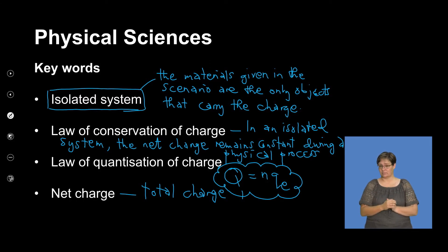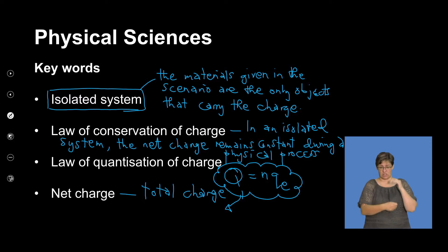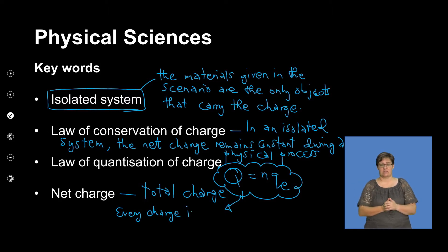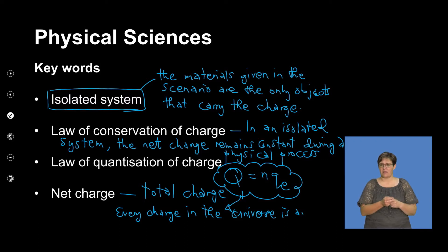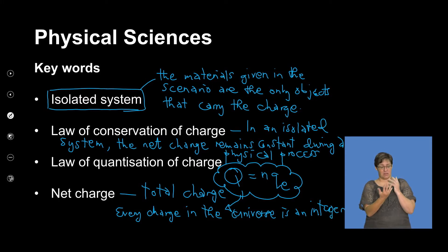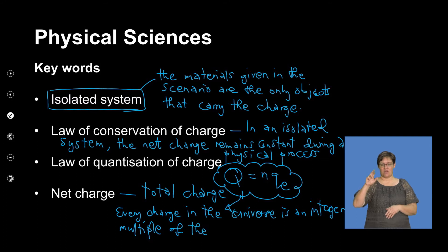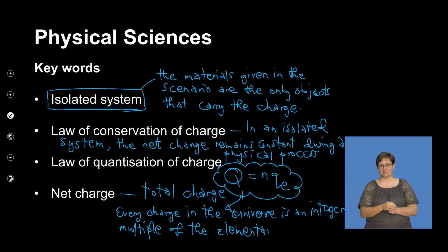The principle of quantization of charge says every charge in the universe — any charge that exists — is an integer multiple of the elementary charge. It's appropriately an integer because it's a whole number. The elementary charge is actually the charge of a single electron — that's what we refer to as the elementary charge, which is a constant.